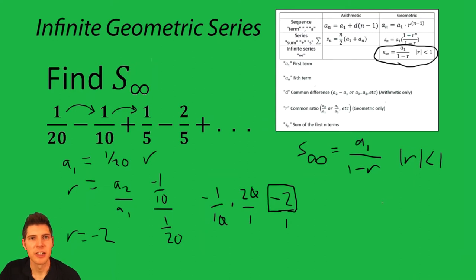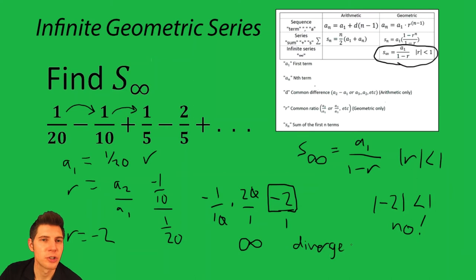Now we got to test that negative two absolute value is less than one. This is not true, so the series diverges. It does not converge. So the answer would be infinity or diverges, depending on what your teacher wants you to write.